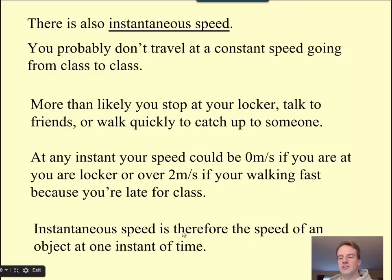Instantaneous speed is therefore the speed of an object at any one instant of time. So if we measured you at your locker, it might be 0 meters per second. But overall, from one distance to another, that's your average. Instantaneous is one moment.